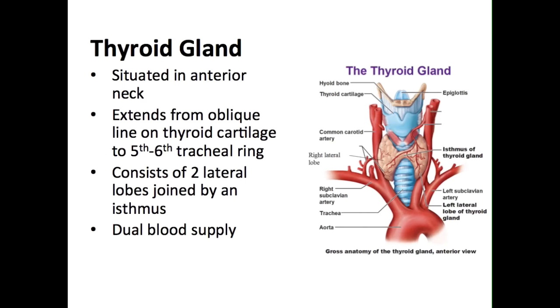The thyroid gland is situated in the anterior part of the neck, in the midline, extending superiorly from the oblique line of the thyroid cartilage, just below the laryngeal prominence, to the fifth or sixth tracheal ring inferiorly.